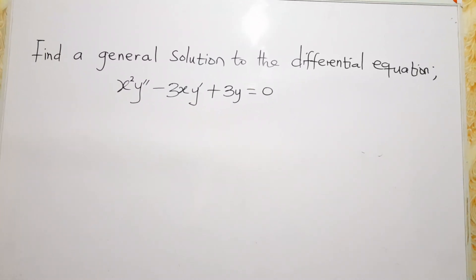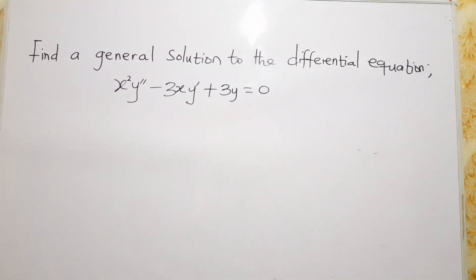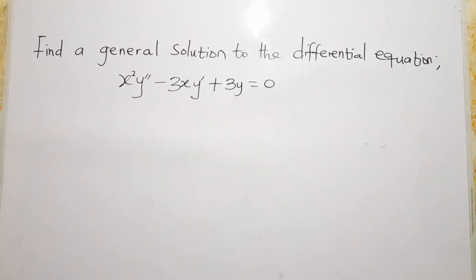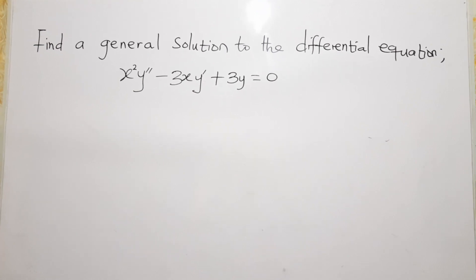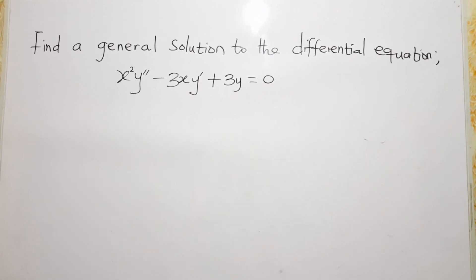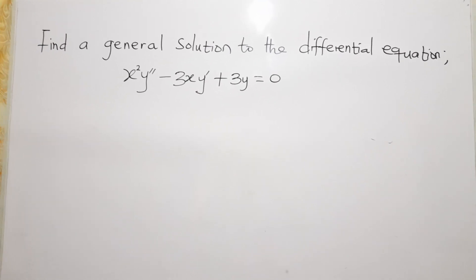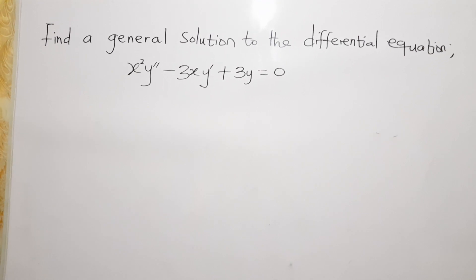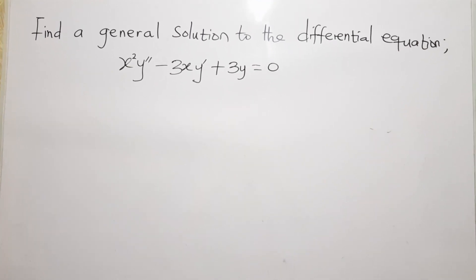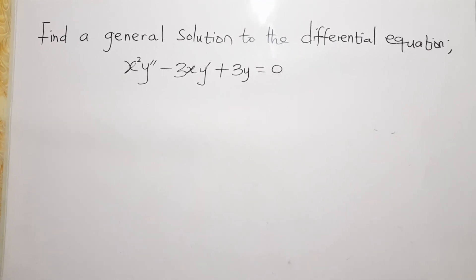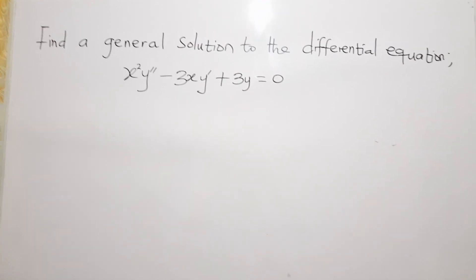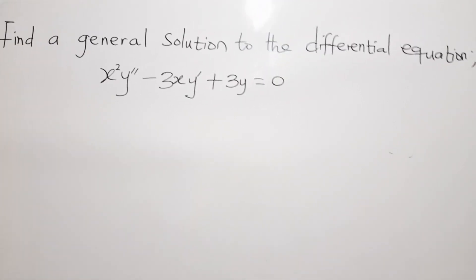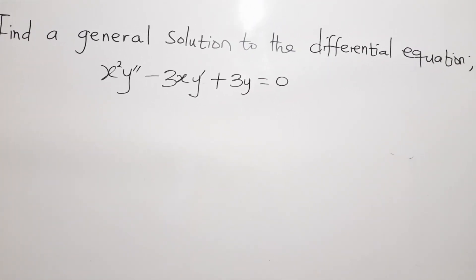Hello lovely people, welcome to my YouTube channel Rich Brain. Today we are going to find a solution to the differential equation on the board. We should find a general solution to the differential equation: x squared y double-prime minus 3x y prime plus 3y equals 0.